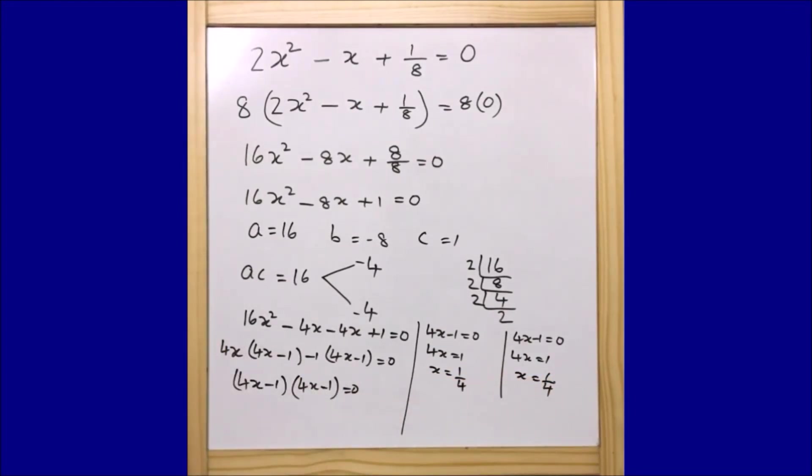Guys, these are the two factors of x that we are looking for, and these are very straightforward and pretty simple. So we got the two factors of x as 1/4 and 1/4. You can see how easy and straightforward we found the two factors of x by solving this equation using the factorization method.